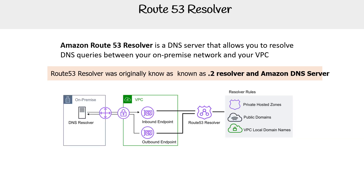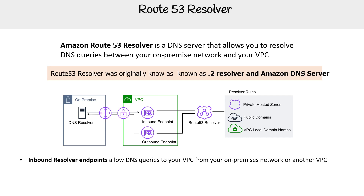If you want to have a DNS server that's going to work with your VPC, then this is what you're going to utilize. Looking at the diagram here, there are two things that you can possibly configure, which are inbound and outbound endpoints.